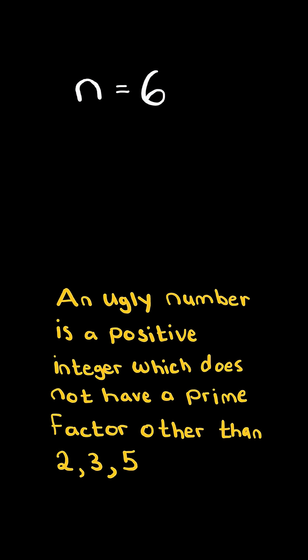Ugly number. Given an integer n, determine if it is an ugly number. An ugly number is a positive integer which does not have a prime factor other than 2, 3, and 5.